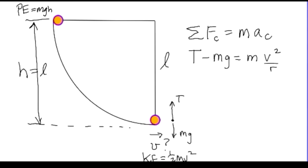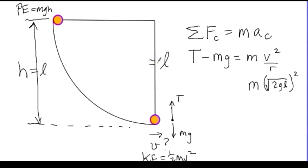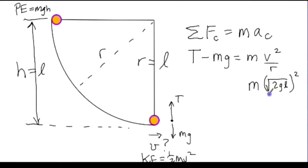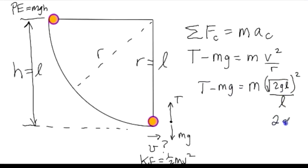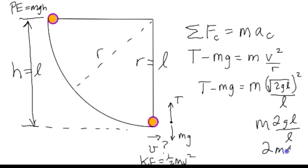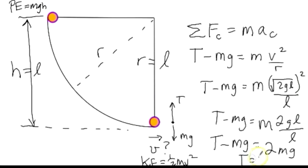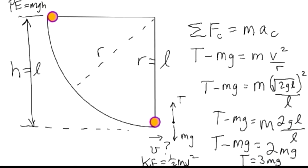So the velocity at the bottom is √(2gl), and the radius r equals l. Substituting back, v²/r = 2gl/l = 2g, giving mv²/r = 2mg. Therefore, the tension in the string equals 3mg — three times the weight of the object.